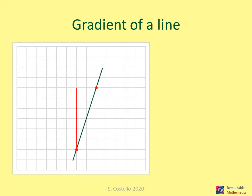In another example, the vertical change is minus six and the run is three, giving a gradient of minus six over three, which is minus two. In yet another, the rise is six and the run is two, so the gradient is six over two, which simplifies to three.